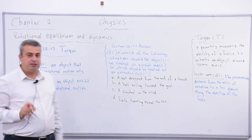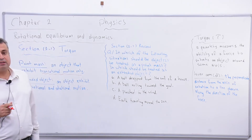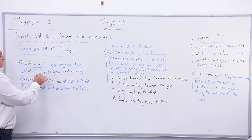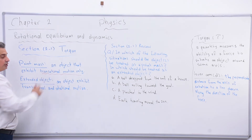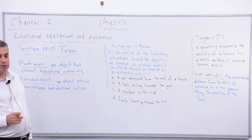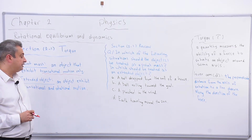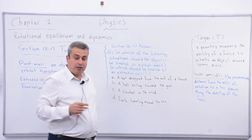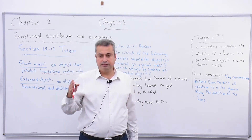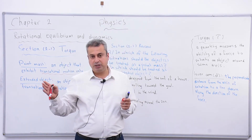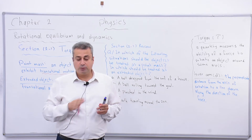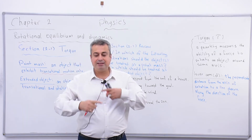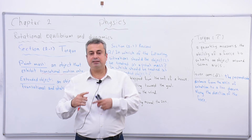For every idea in physics, we have a key, and we use that key to answer the question. In this case, the key is translational motion only - just one type of motion. What do we mean by that? The object is changing position from one point to another, but while doing so, it is not rotating and it is not rolling.